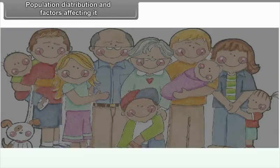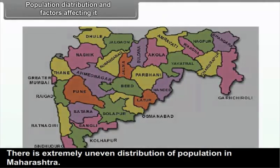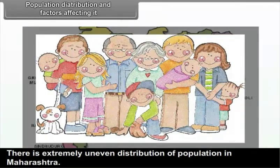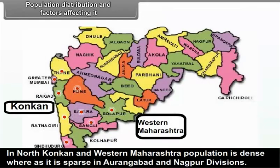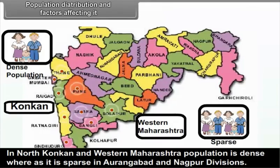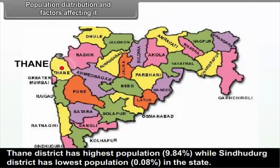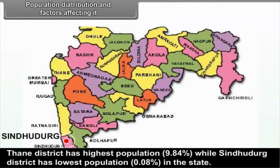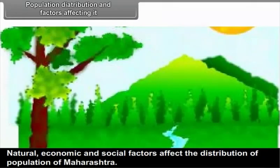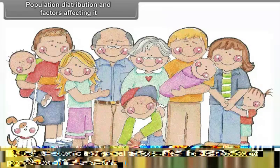There is extremely uneven distribution of population in Maharashtra. In North Konkan and Western Maharashtra, population is dense, whereas it is sparse in Aurangabad and Nagpur divisions. Thane district has the highest population at 9.84%, while Sindhudurg district has the lowest at 0.08%. Natural, economic, and social factors affect the distribution of population in Maharashtra.